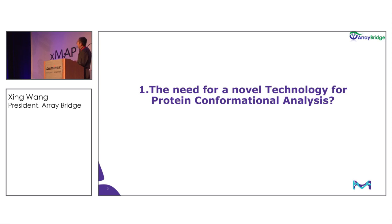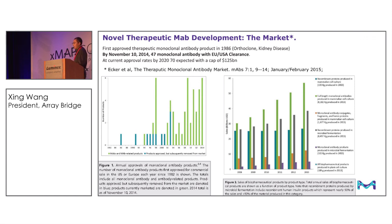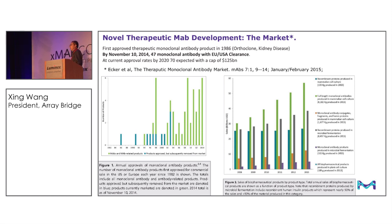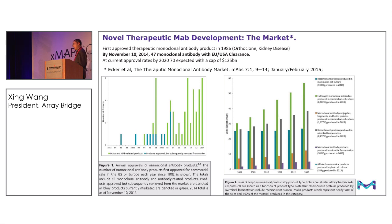Why do we need a new technology for protein conformational analysis? For the biotech market, we have a very rapidly growing market — biotech growth is about two to three times faster than the small molecule market. By 2020, there will be 70 biologics, mainly mAbs, approved with revenue of about $125 billion. So this is a very huge and rapidly growing market, and there is a definite need for new technologies to meet it.